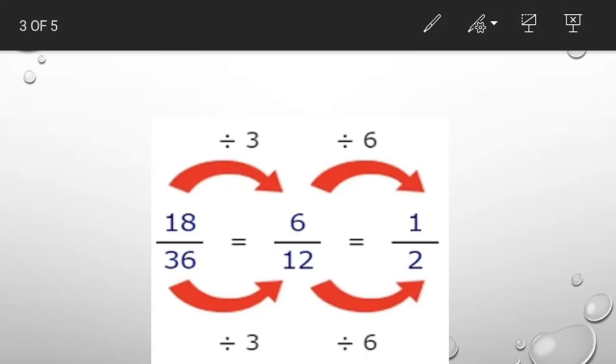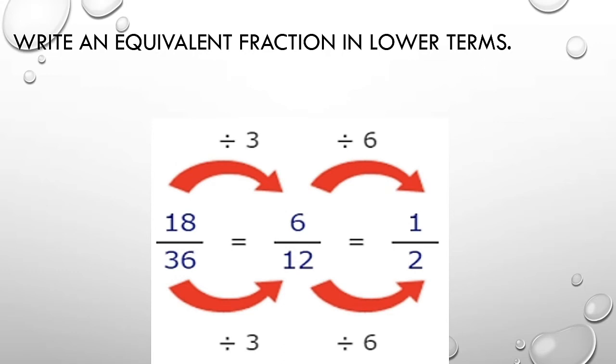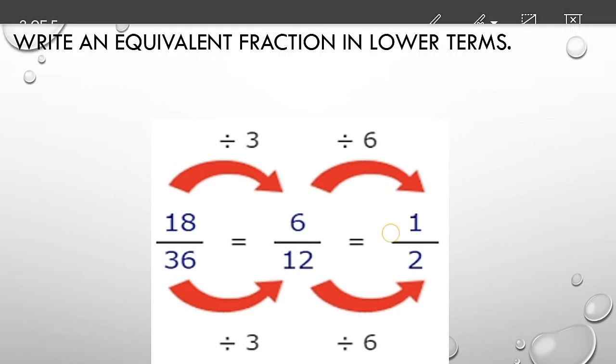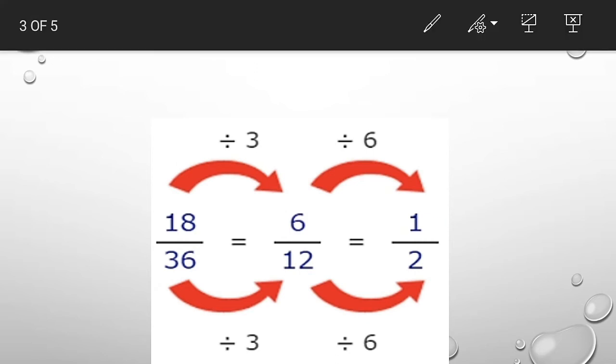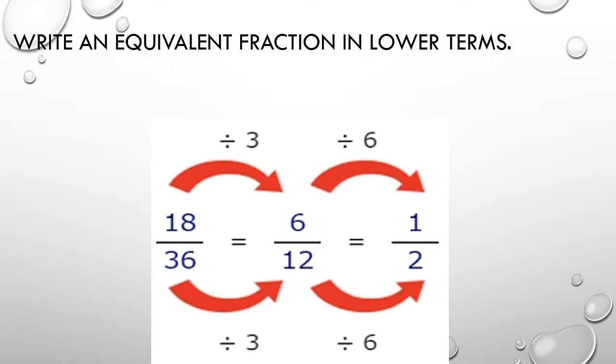This is 4.1 exercise D. What did we say? The instruction is write an equivalent fraction in lower terms. Lower term means divide. Here is 18 by 36. 18 is numerator and 36 is denominator.